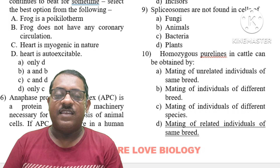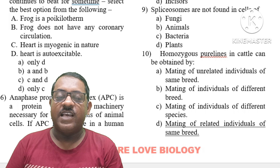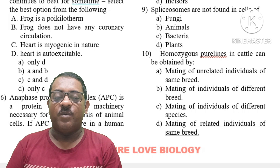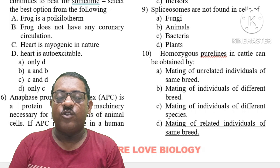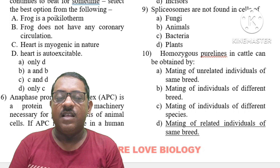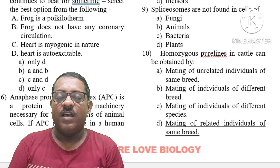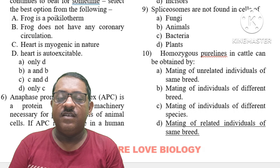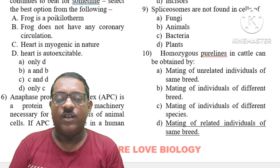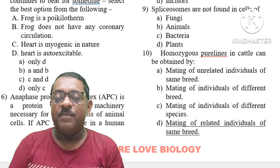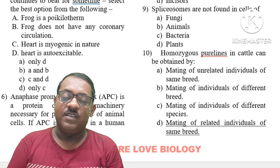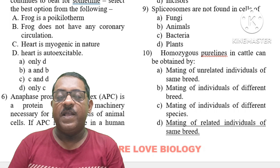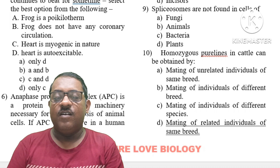Question number 10: A homozygous pure line in cattle can be obtained through inbreeding of closely related animals. Mating of unrelated individuals of the same breed will not produce a pure line. Mating of related individuals of the same breed is the right answer for obtaining a homozygous pure line.